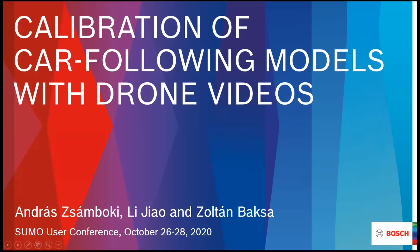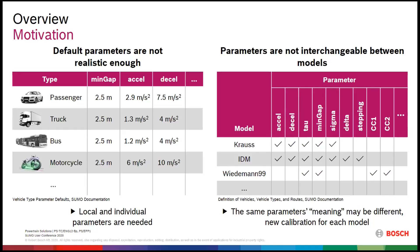Our motivation is twofold. First, the default parameters are simply not realistic enough for most traffic simulation situations or scenarios — these are just discrete values, not distributions, as one would describe traffic flow more accurately. Second, even if we have reliable, accurate parameters for one model, we may not use these parameters in a different model. It can happen that the other model doesn't have the same parameters, or it interprets acceleration or deceleration differently.